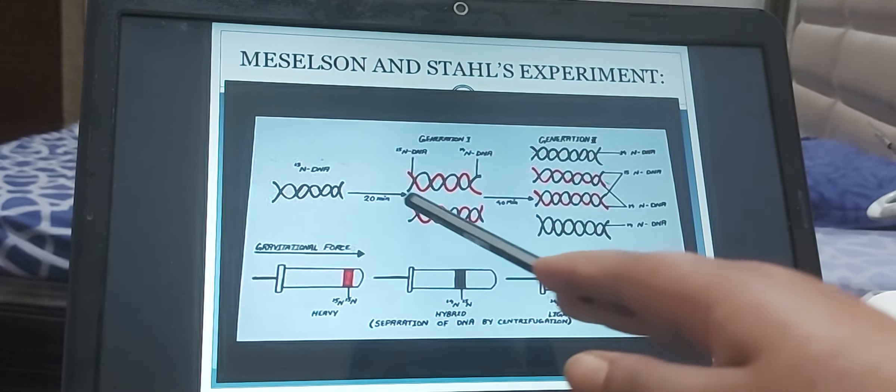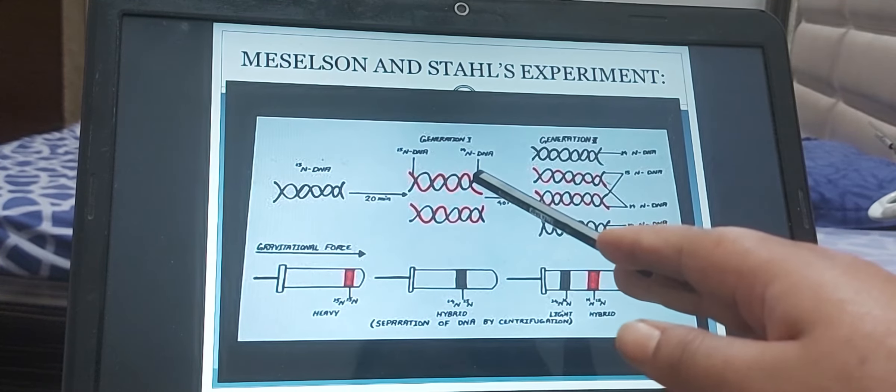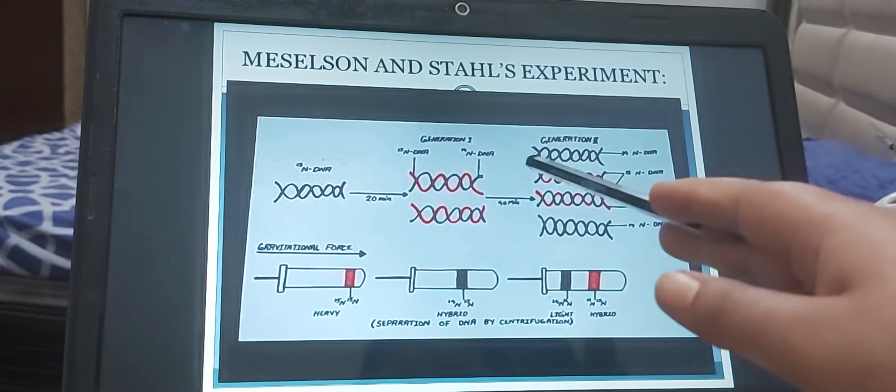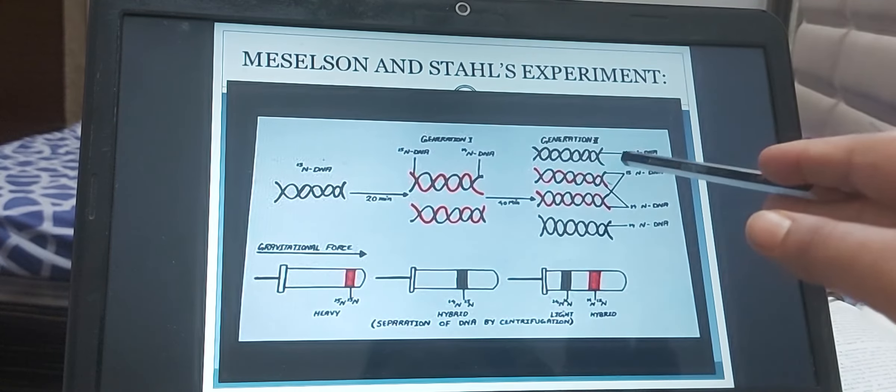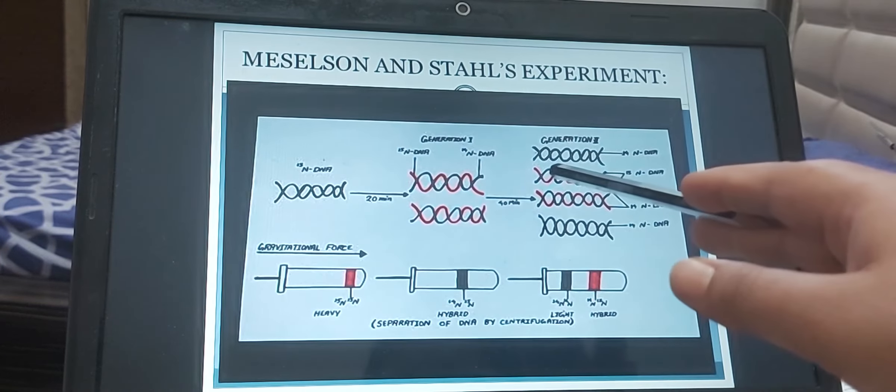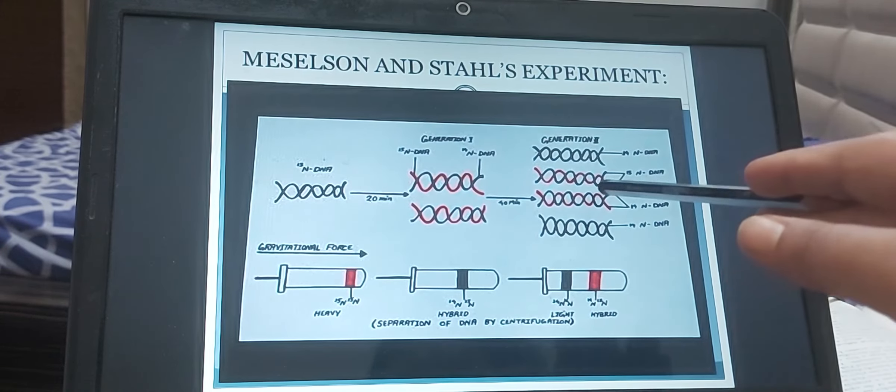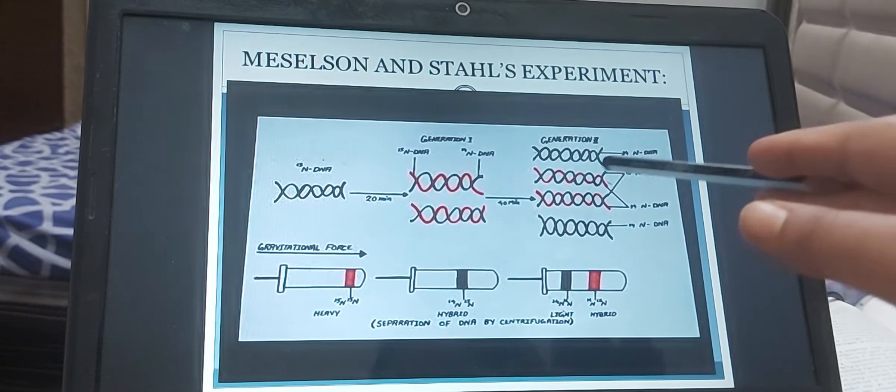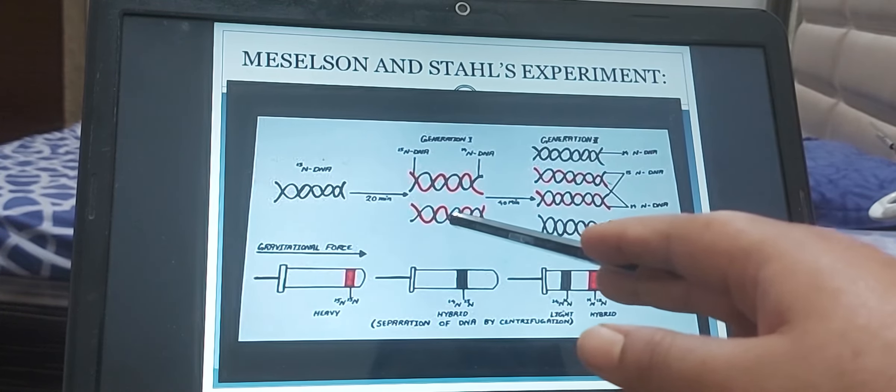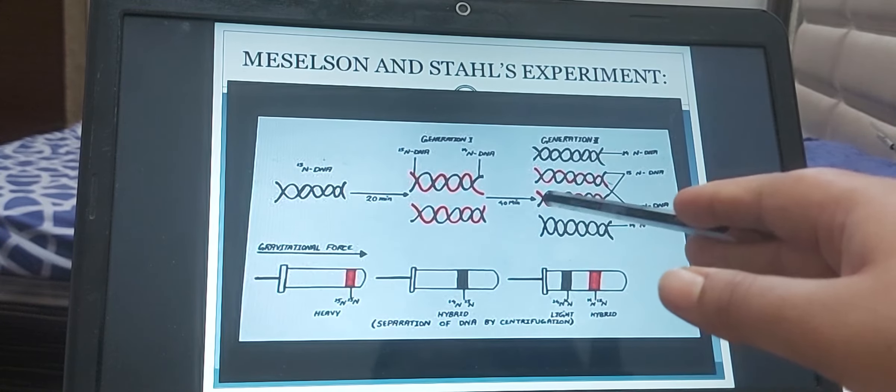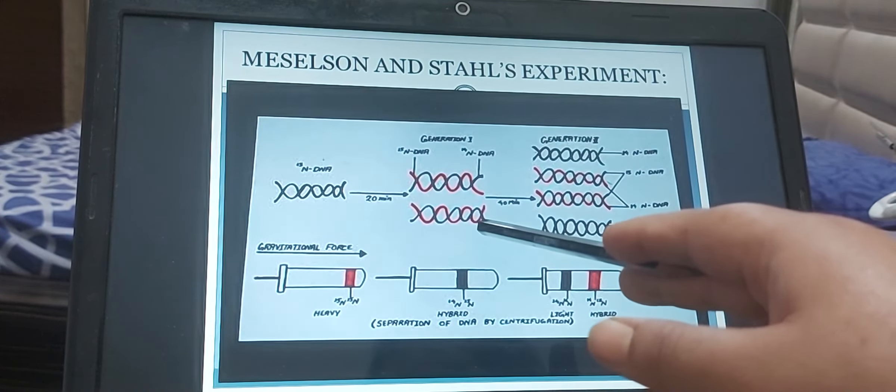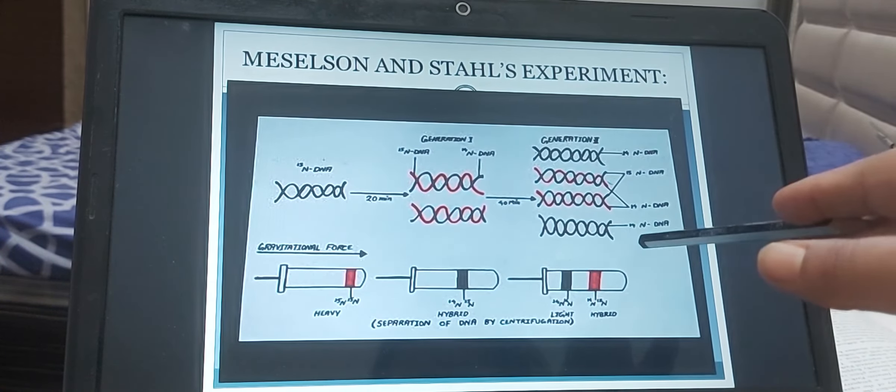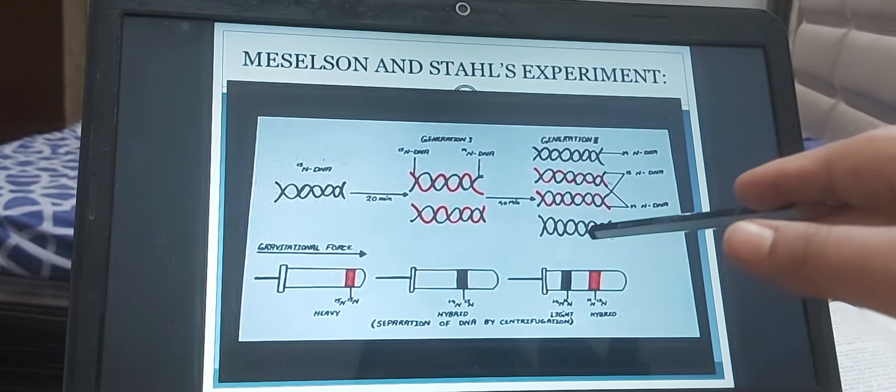So here you can see now this DNA is acting as a parental DNA. From this parental DNA, the two new strands are formed. So here in this first case, the black one, N14 is the parental, N14 is the newly synthesized. And the other one is red one, N15 is the parental and black one, N14 is newly synthesized. Similar in this case also. So here in that case, N15 is acting as a parental, N14 is newly synthesized. Here N14 black is acting as a parental and N14 black is again synthesized.